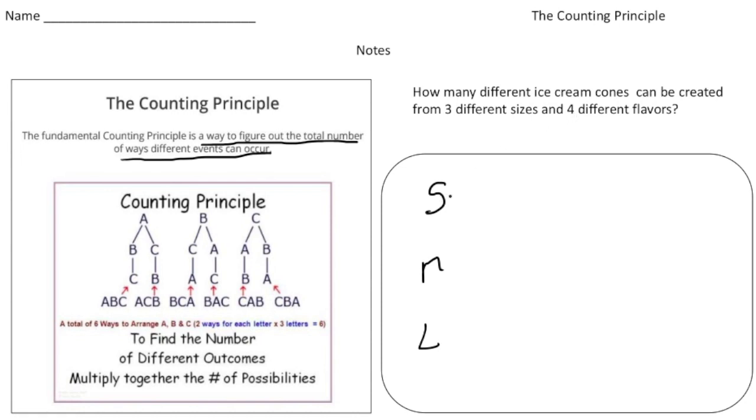So there could be a small and then a one, a small and a two, small and a three, and small and a four, right? So that right there, there's four possibilities.